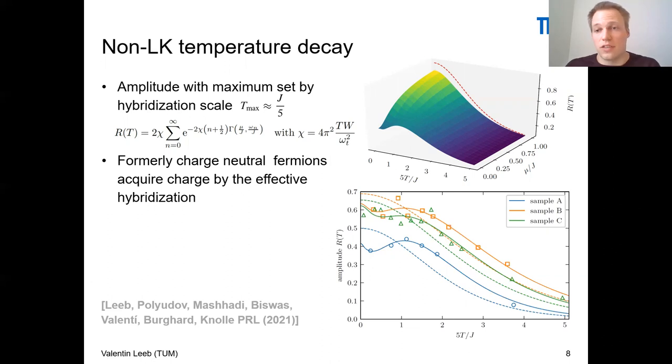This correspondence of experimental data and our theory has led us to the following conclusion. Formally, we had charge neutral fermions as excitations of the Kitaev layer. By this effective hybridization with the Kondo coupling, these charge neutral fermions have acquired charge, the charge of the itinerant hopping electrons of graphene.